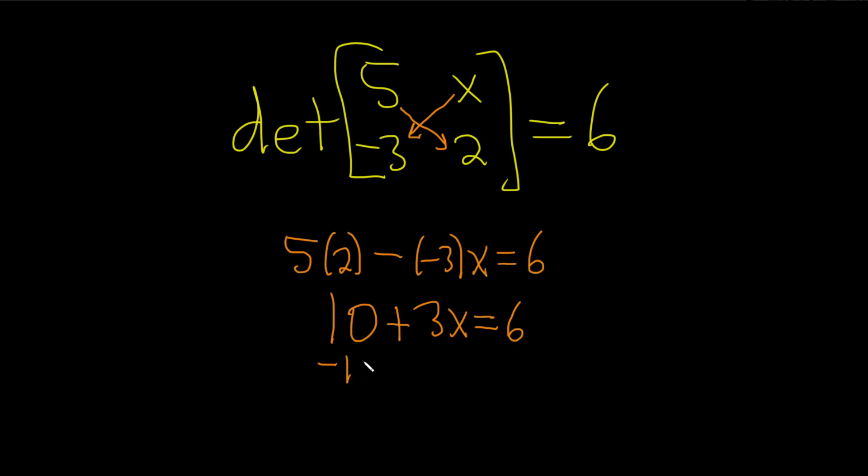Now we can subtract 10 from both sides. So minus 10, minus 10. So we get 3x equals 6 minus 10, which is negative 4.